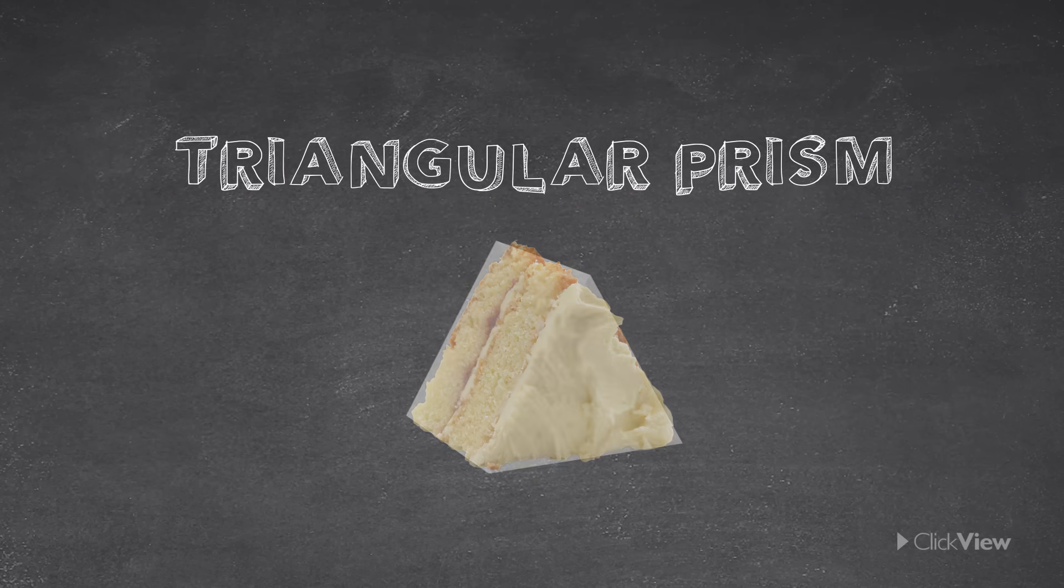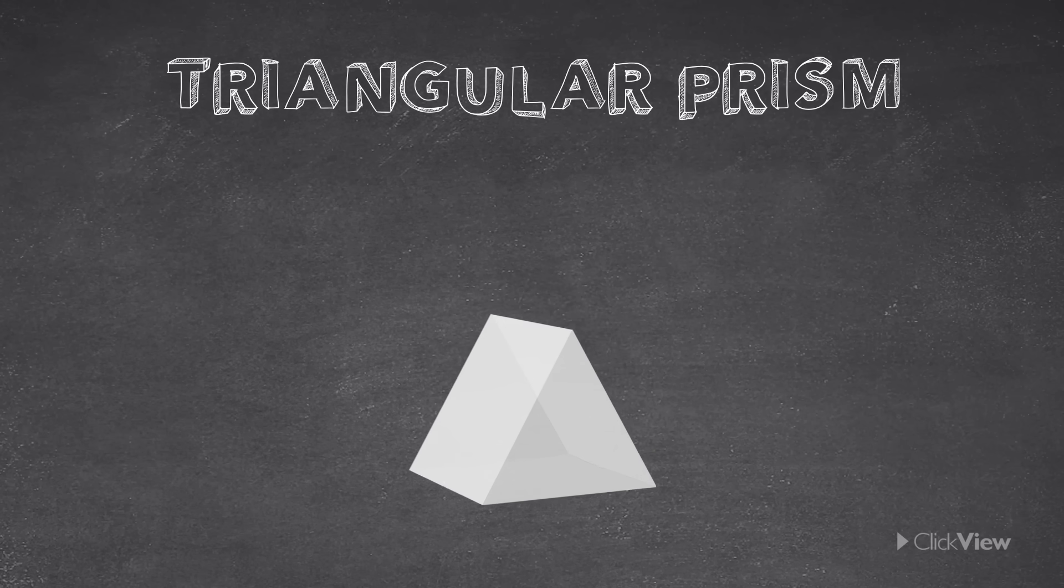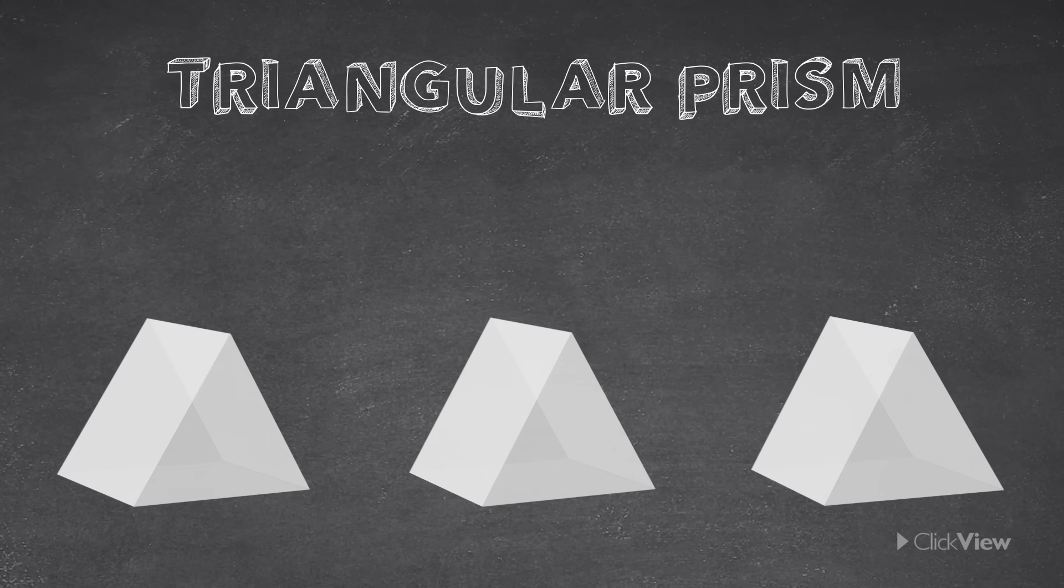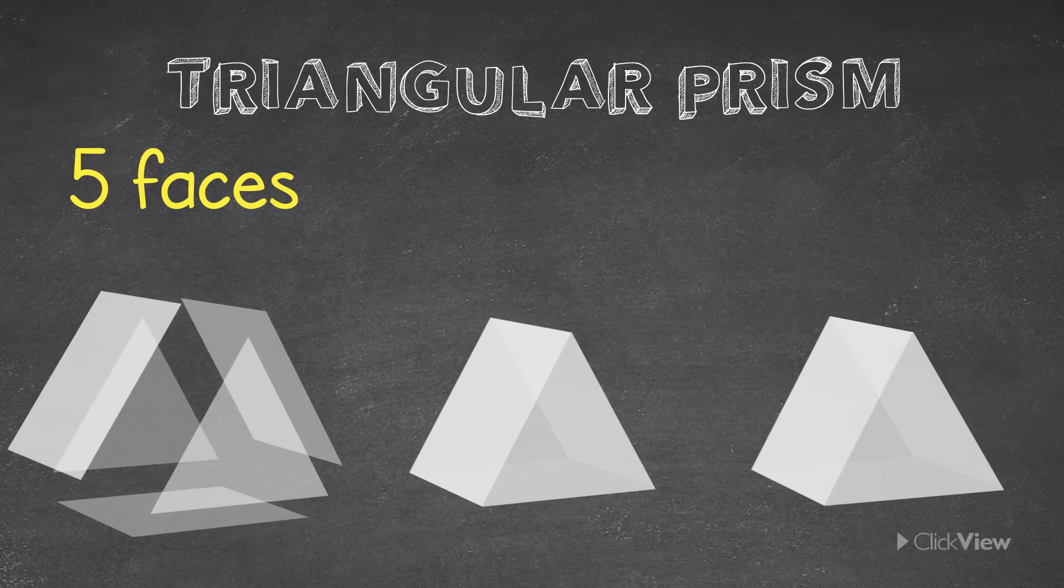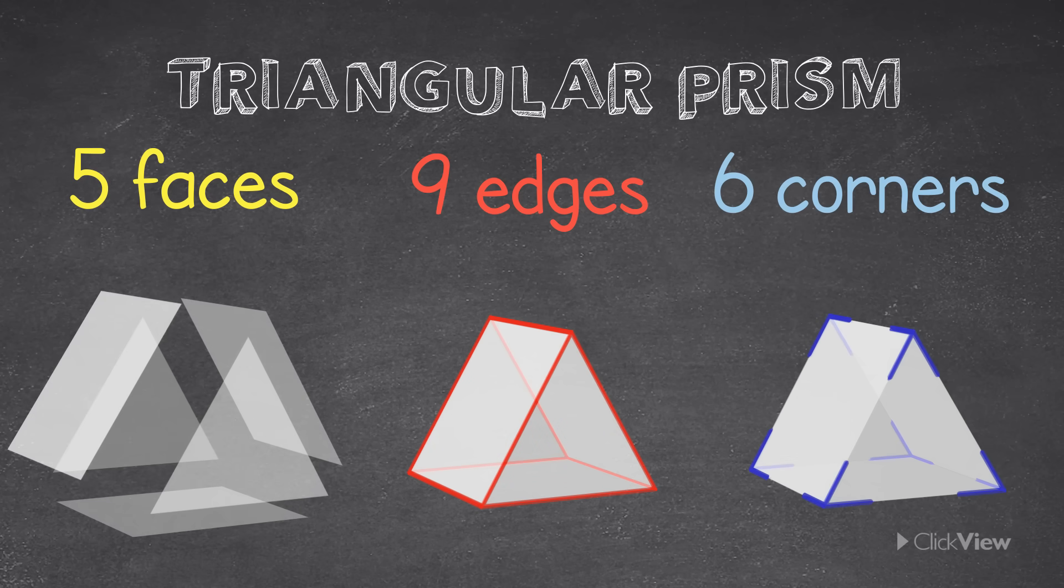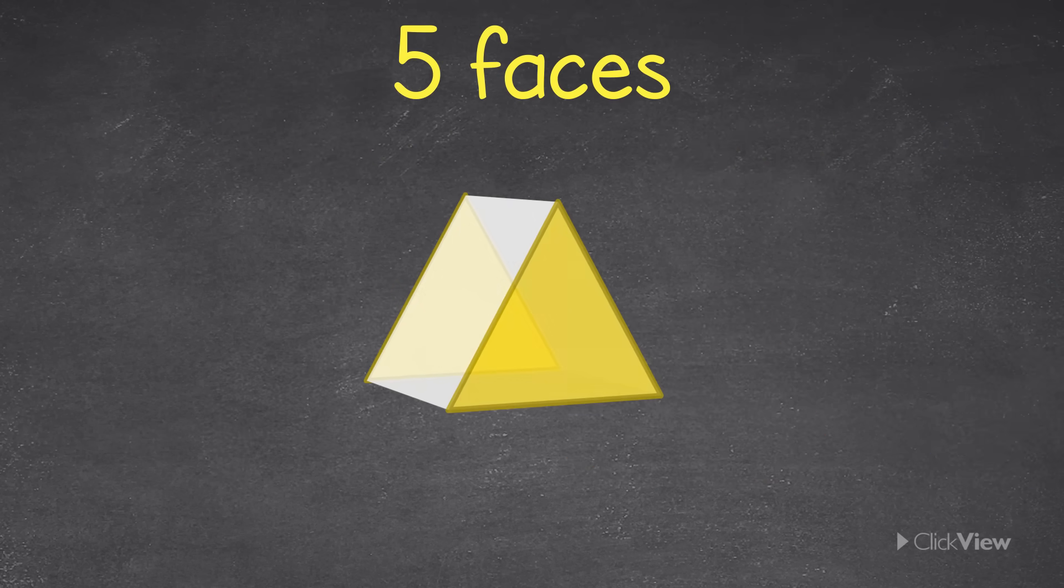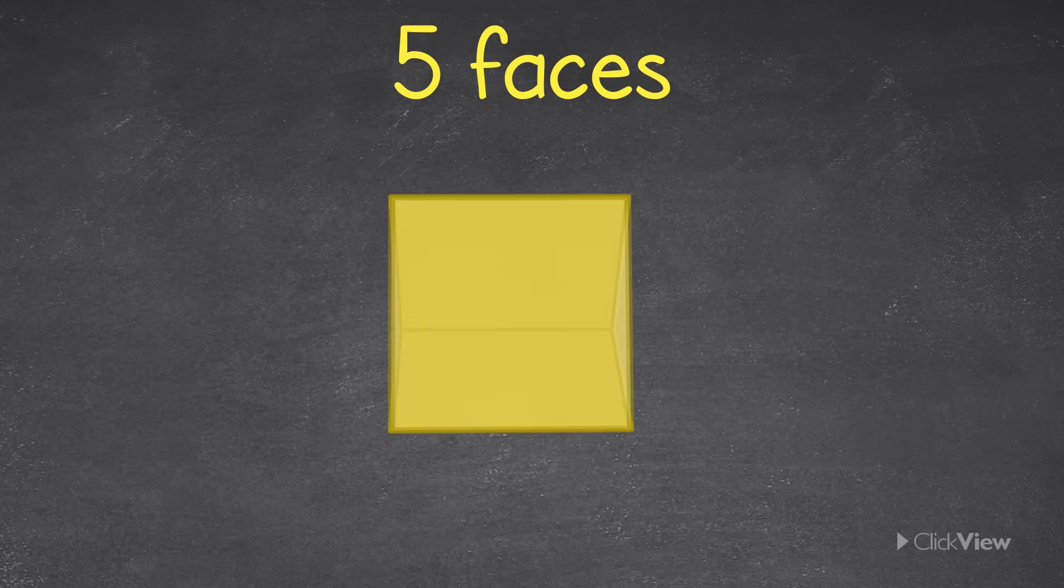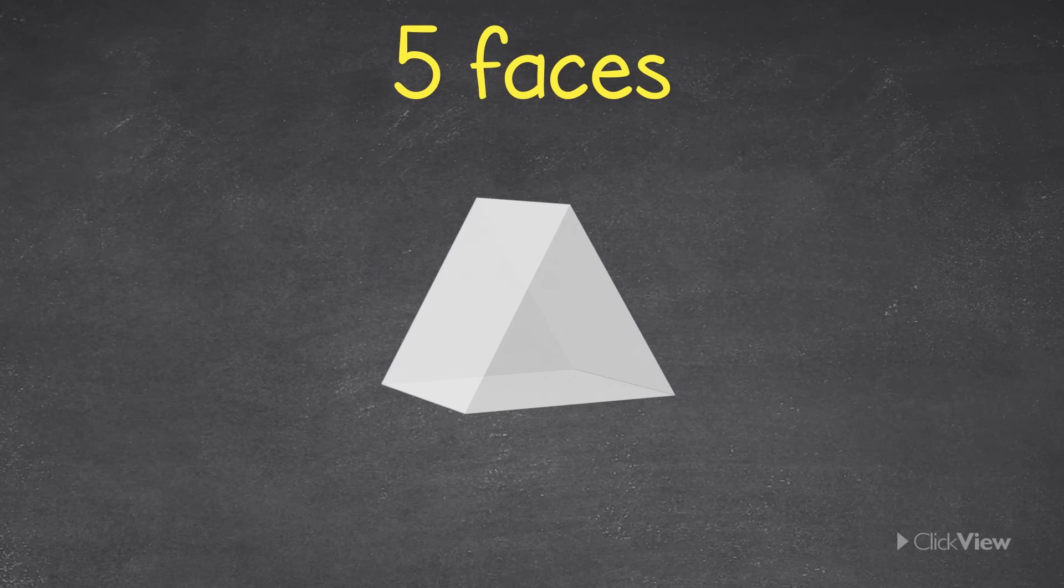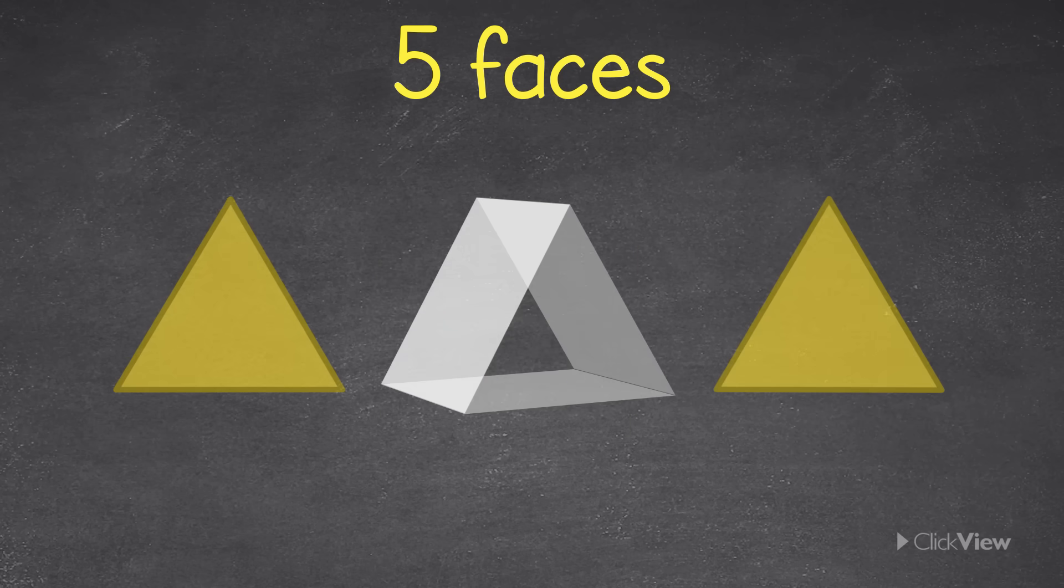This shape is a triangular prism. A triangular prism has 5 faces, 9 edges and 6 corners. Triangular prisms have 2 faces that are triangles and 3 faces that are rectangles. The 2 triangle faces are always the same size.